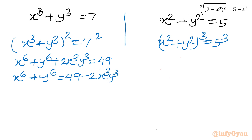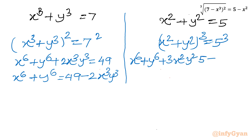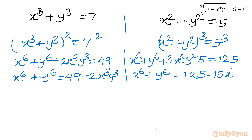Now cubing equation 2 using the identity (a+b)³ = a³ + b³ + 3ab(a+b): x to the 6 plus y to the 6 plus 3 times x squared y squared times 5 equals 5 cubed equals 125. So x to the 6 plus y to the 6 equals 125 minus 15 x squared y squared.